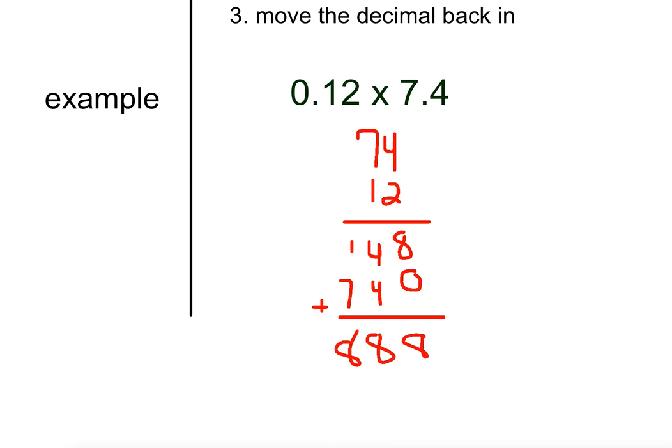Using the procedure of how to do this, the decimal point would be here, so I'd move it out one time to make it a whole number. Or this one would be 2 times, because it would be right here, 1, 2. So it needs to move back in 3 times. 1, 2, 3. Or I can think of this as the hundredths times the tenths, so my answer needs to be in the thousandths place. And it is.